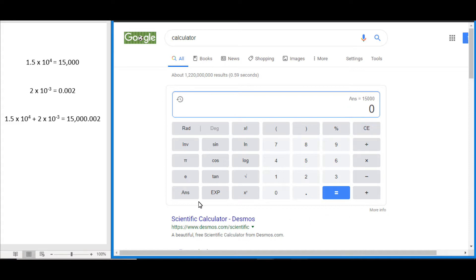This also works for small numbers. If we have 2 times 10 to the power of negative 3, we can enter it as 2 E, and then since it's a negative exponent, we just hit minus 3 and equals, and we see this equals 0.002. We can also use this to add and subtract numbers in scientific notation.